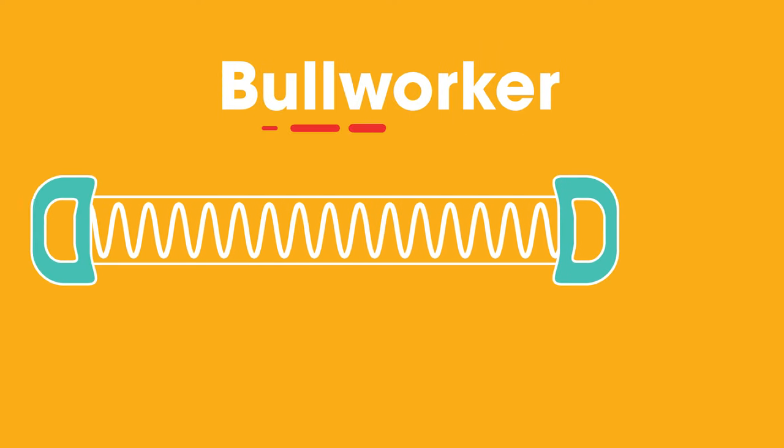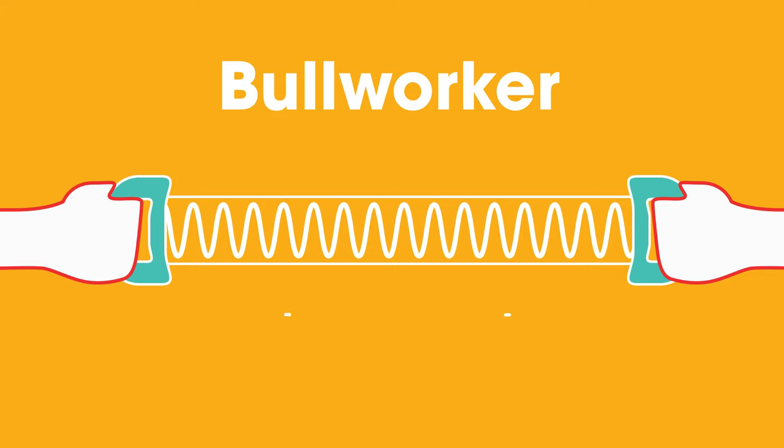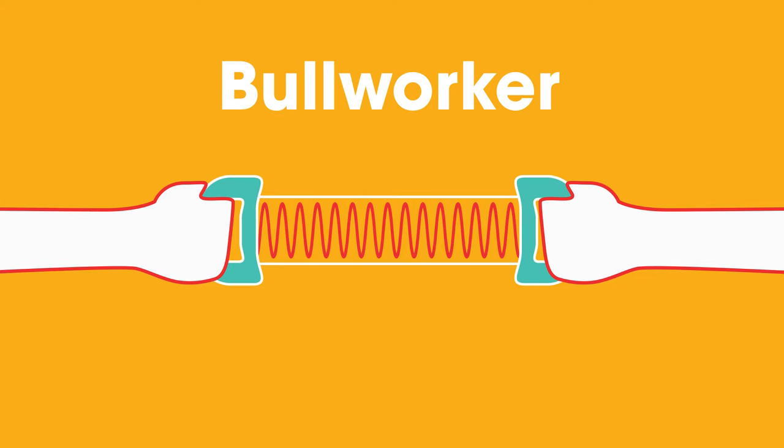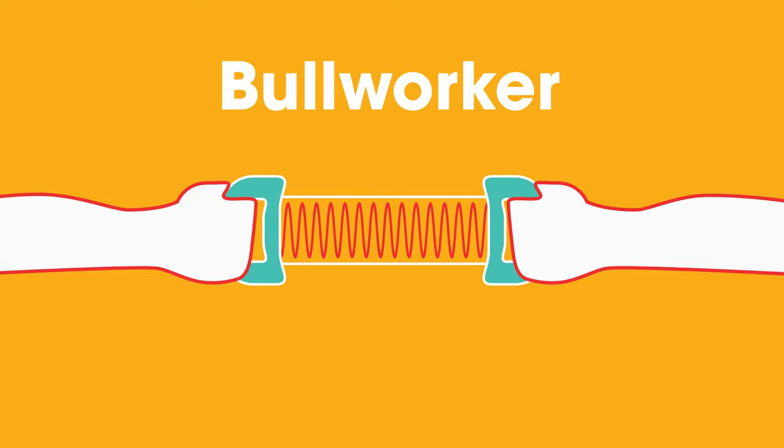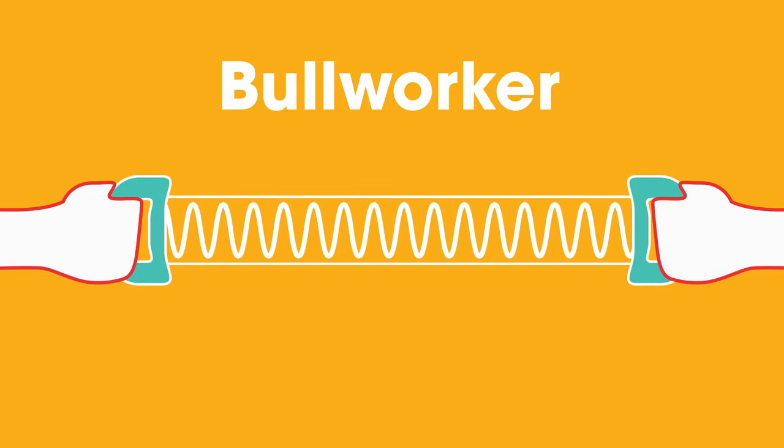This machine, called a bullworker, is used to exercise muscles. When the ends are pushed inwards, the spring inside is compressed. The bigger the force, the more the spring is compressed. If the force is gradually reduced, the spring expands until it regains its original shape.